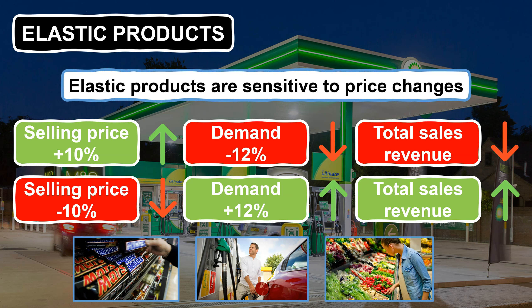Popular supermarket products such as milk, bread, fruit and veg are also price elastic, as competition is so intense in the industry and customers have lots of choice. Therefore, if a supermarket such as Tesco raised their prices on these popular everyday items by 20%, it's likely that demand would decrease dramatically as customers look to local competitors for alternative options.